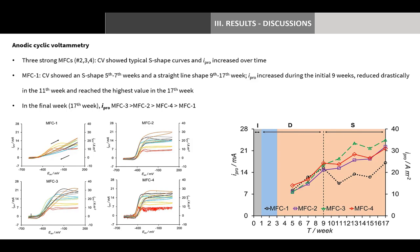In the final 17th week, current production was highest in MFC3 at 24.44 mA, followed by MFC2 at 22.31 mA, MFC4 at 21.73 mA, and MFC1 at 17.09 mA. Unlike the LSV polarization result, the anode current production of MFC3 was best in CV results. However, its CV area was smaller than those of MFC2 and MFC4, and its cathode resistance (43.4 ohms) was slightly higher than MFC2 (41.7 ohms) and MFC4 (42.6 ohms). Overall, various factors seem to be involved in MFC performance.